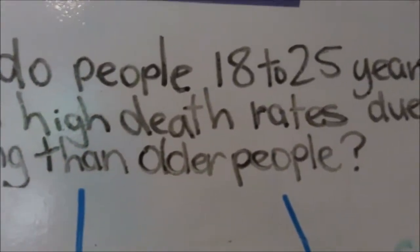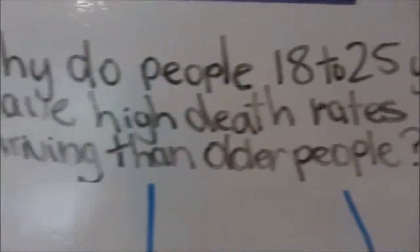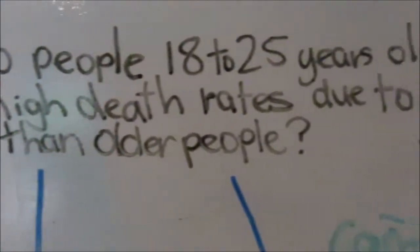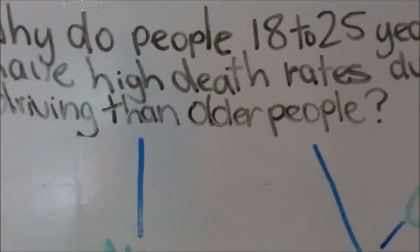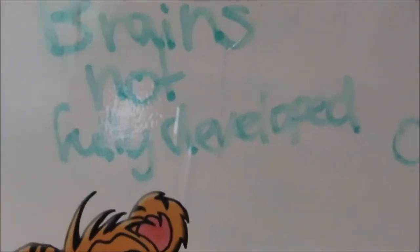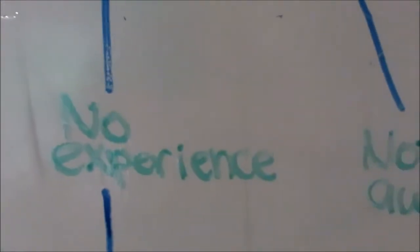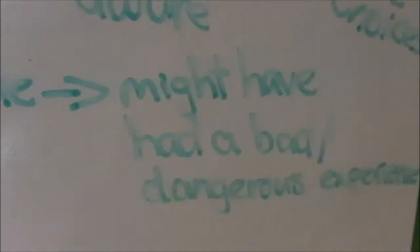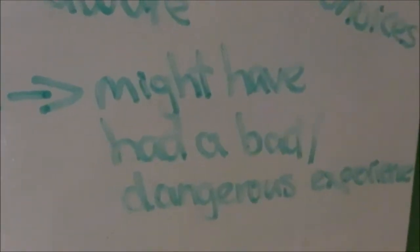Why do people 18 to 25 years old have higher death rates due to drink driving than older people? Firstly, they are not mature. This is because their brains are not fully developed yet. They have had no experience, unlike older people who might have had a bad experience or a dangerous experience.